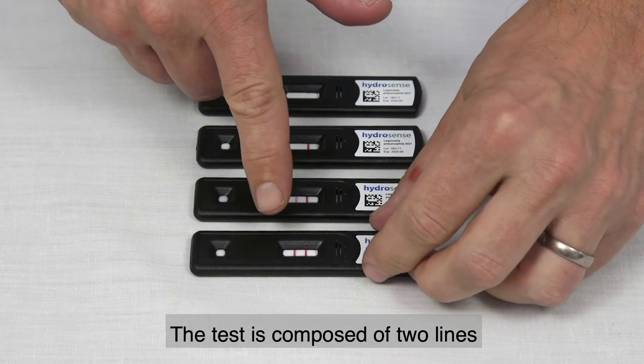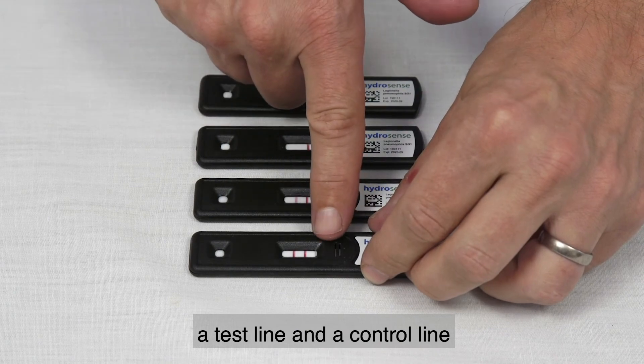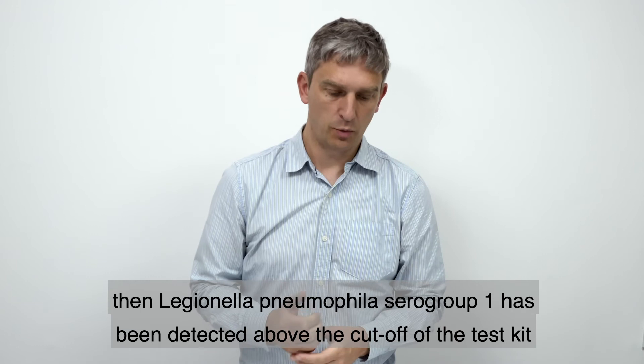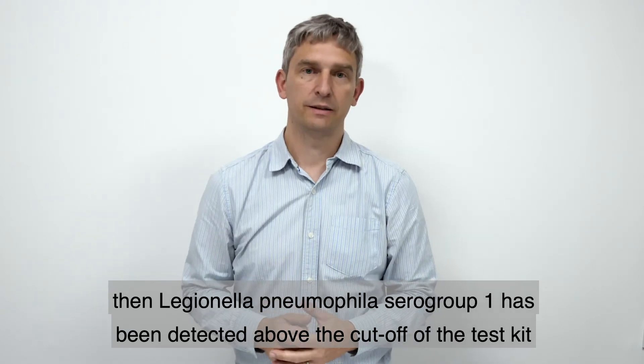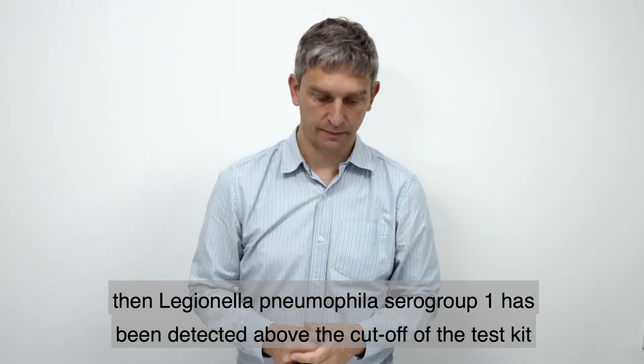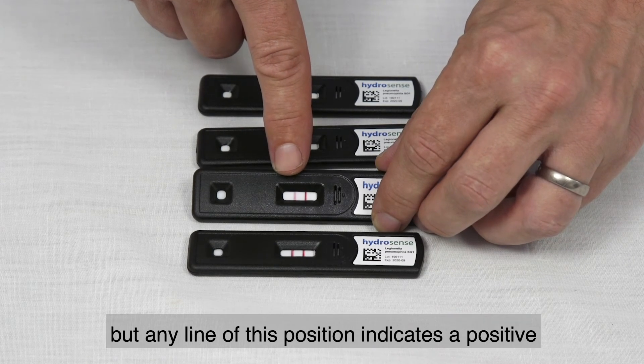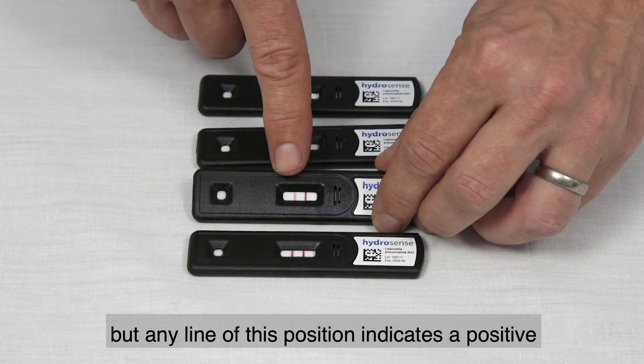The test is composed of two lines: a test line and a control line. If both lines are present, then Legionella pneumophila serogroup 1 has been detected above the cutoff of the test kit. The positive signal at the test line may well be weak, but any line at this position indicates a positive.